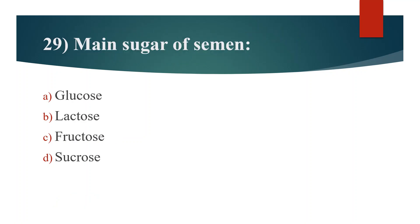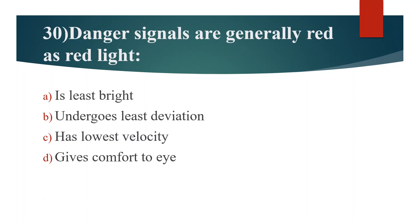Twenty-ninth question. Main sugar of semen is. Option A: Glucose. Option B: Lactose. Option C: Fructose. Option D: Sucrose. Answer is Option C: Fructose.